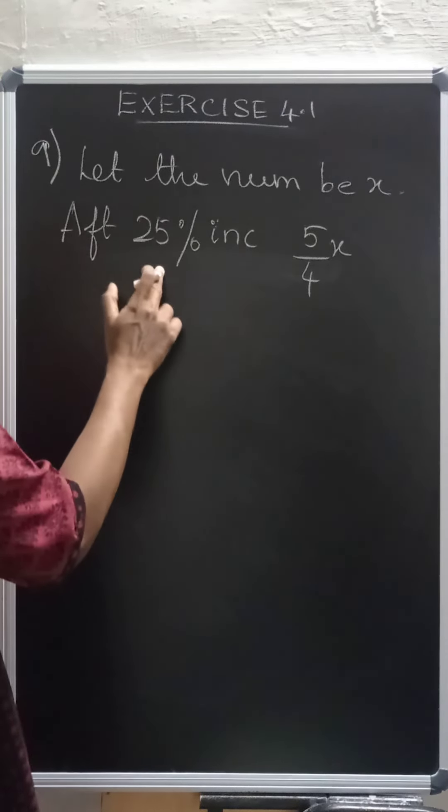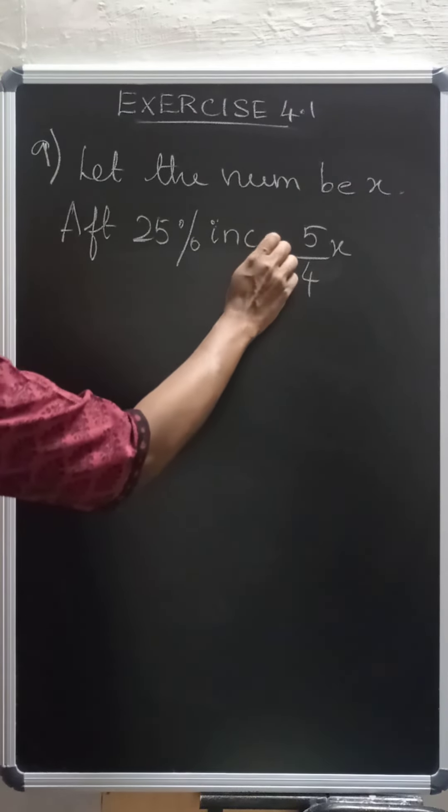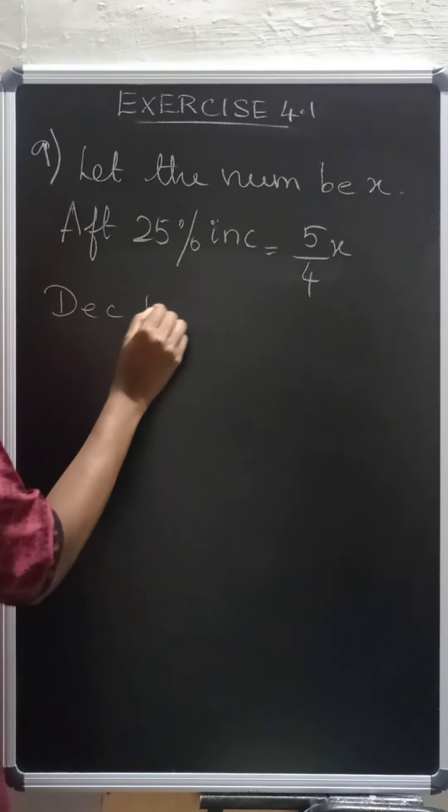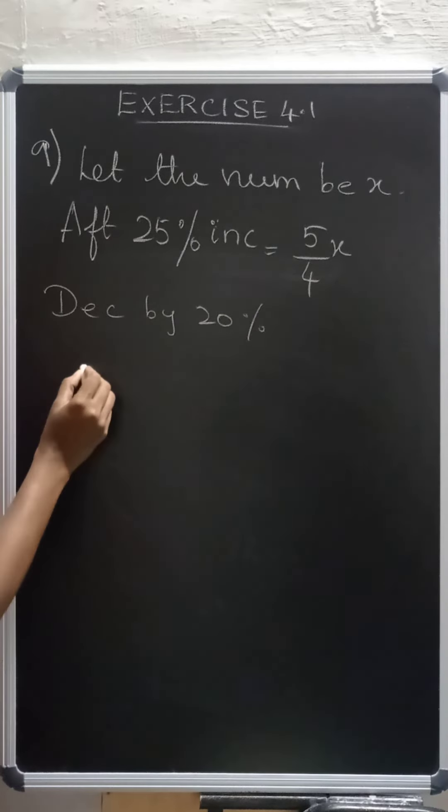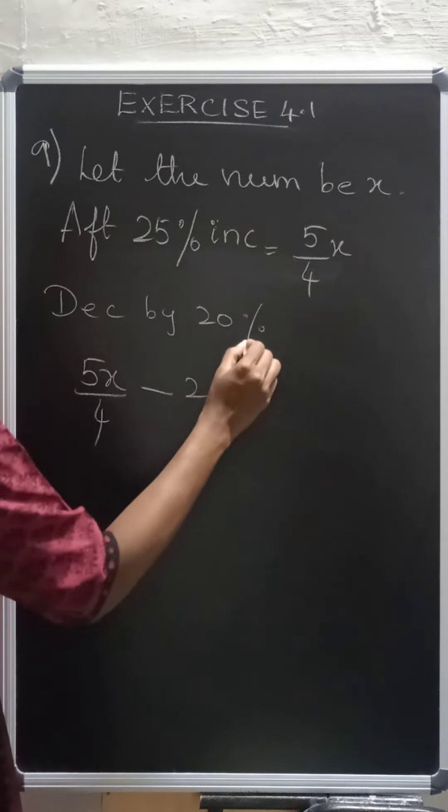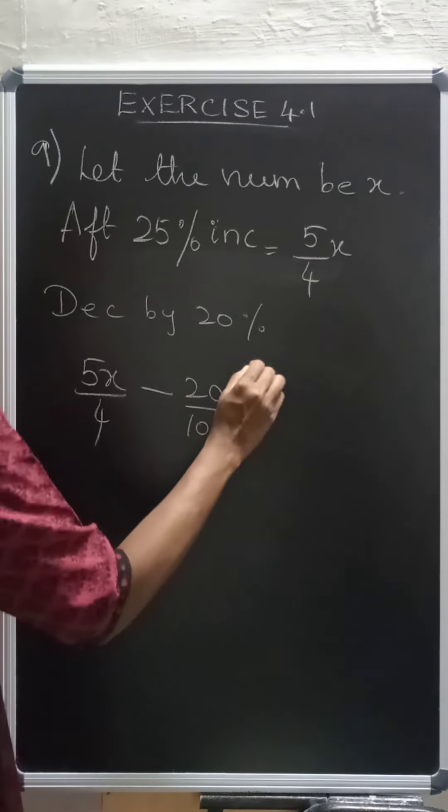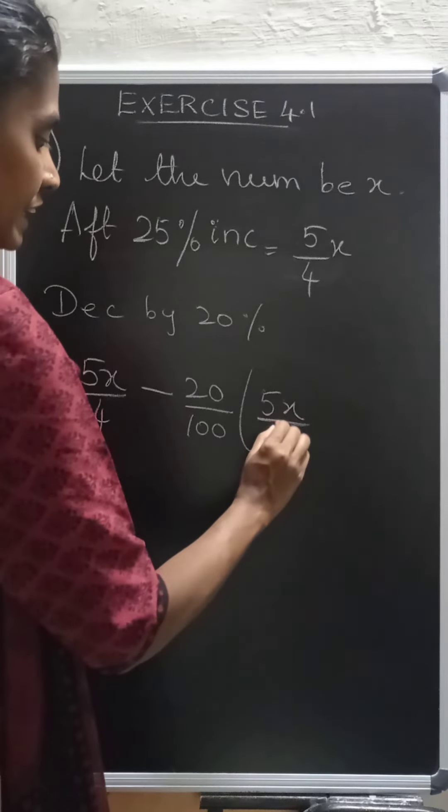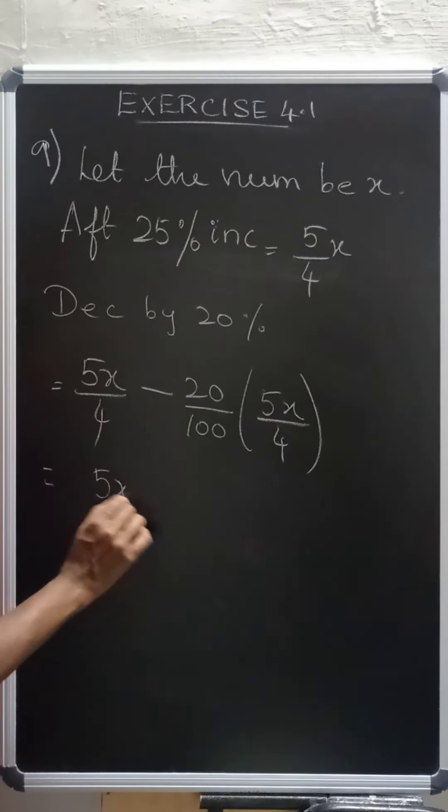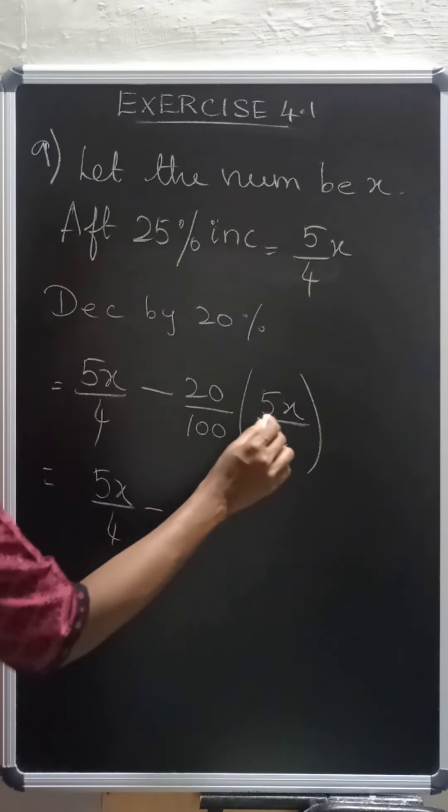After 25% increase, the number is 5 by 4x. Now we are going to decrease by 20%. So, now the number is 5x by 4. Decreased means minus 20%. So 20 divided by 100 of 5x by 4. Now we need to solve this expression. 5x by 4 minus 5,